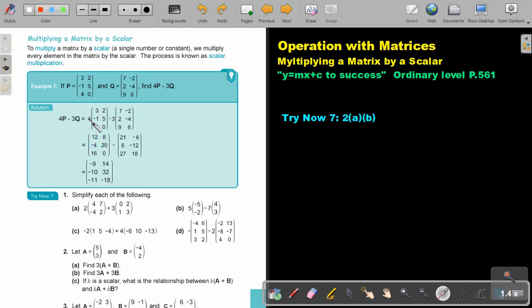3 times 4 is 12. 4 times 2 is 8. 4 times negative 1 is negative 4. 4 times 5 is 20. 4 times 4 is 16. 4 times 0 is 0. 3 times 7 is 21, 3 times 9 is 27.